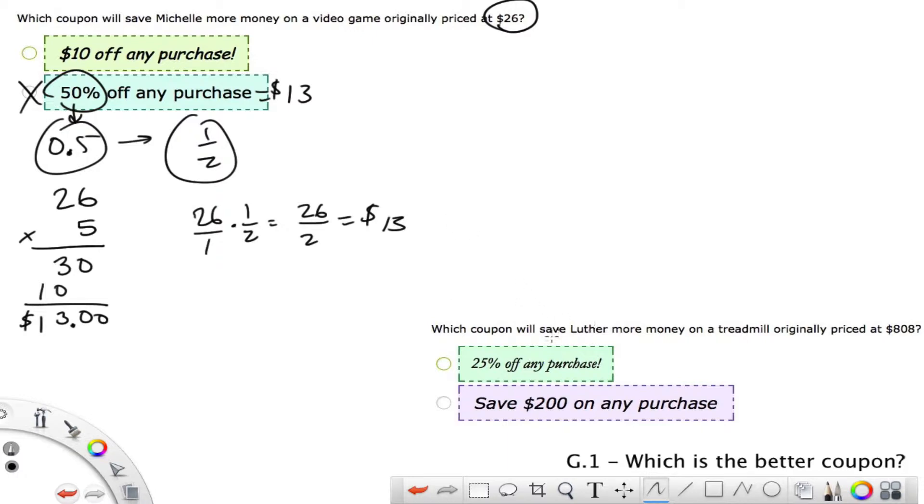Decimals and percentages and fractions become very helpful. Let's look at this one. So we now have $808 over here, and we have either $200 off or 25% off. So 25%, that becomes 0.25. That's a little more awkward to multiply because it's got the two digits. So if we also know that 0.25 is 1/4, that becomes much easier. So 808 times 1/4, that would be 808 over 1, and then we multiply straight across.